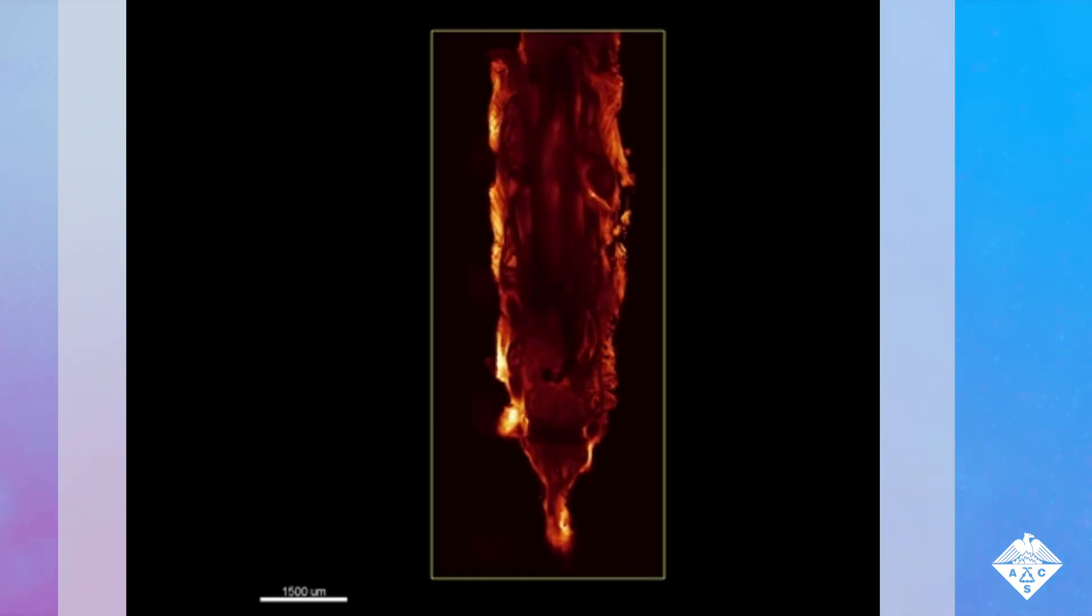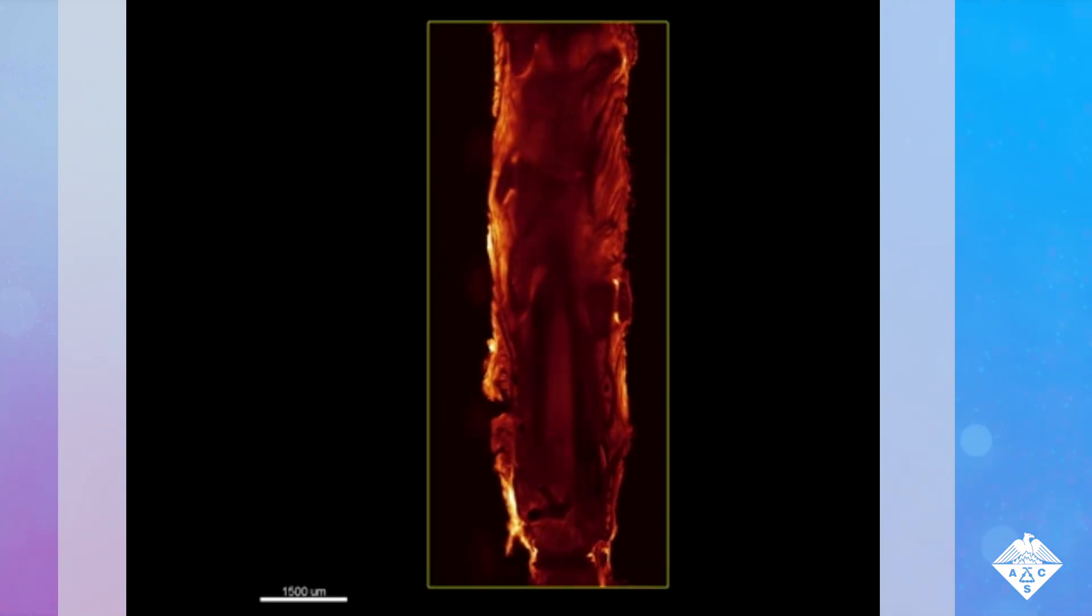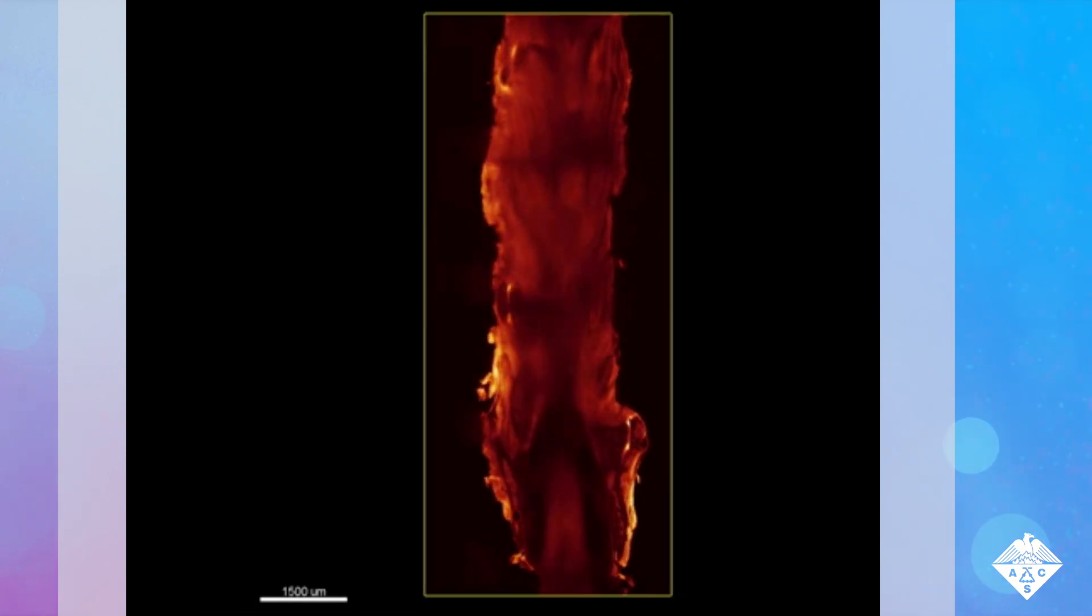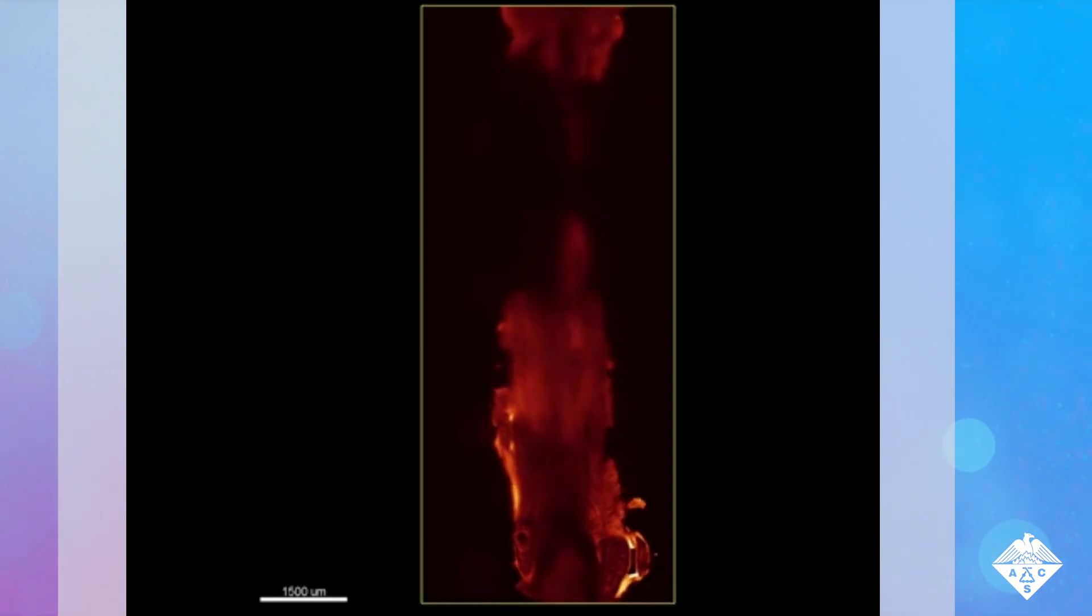Then, the researchers removed a portion of the animal's spines and imaged them with light-sheet fluorescence microscopy. This technique produced precise 3D maps where denatured collagen appeared bright white-yellow in color.